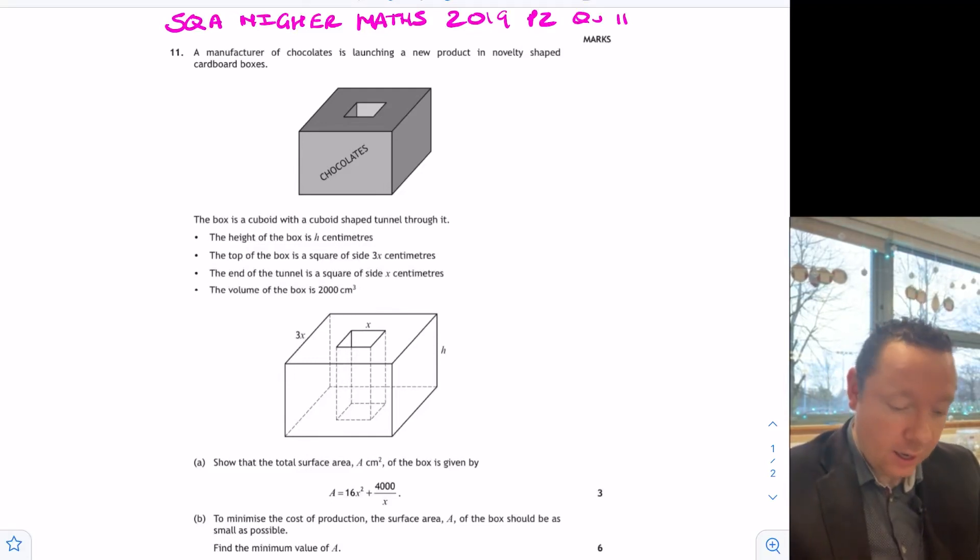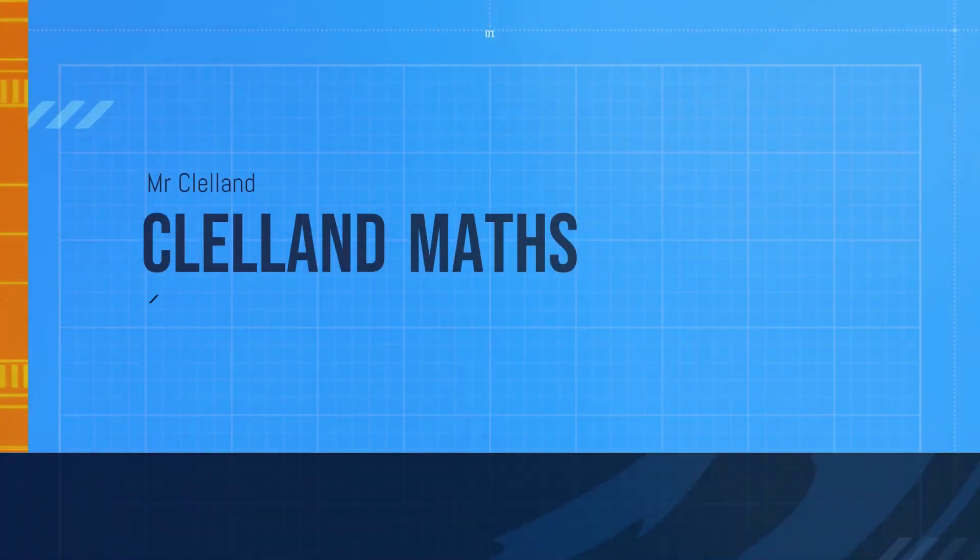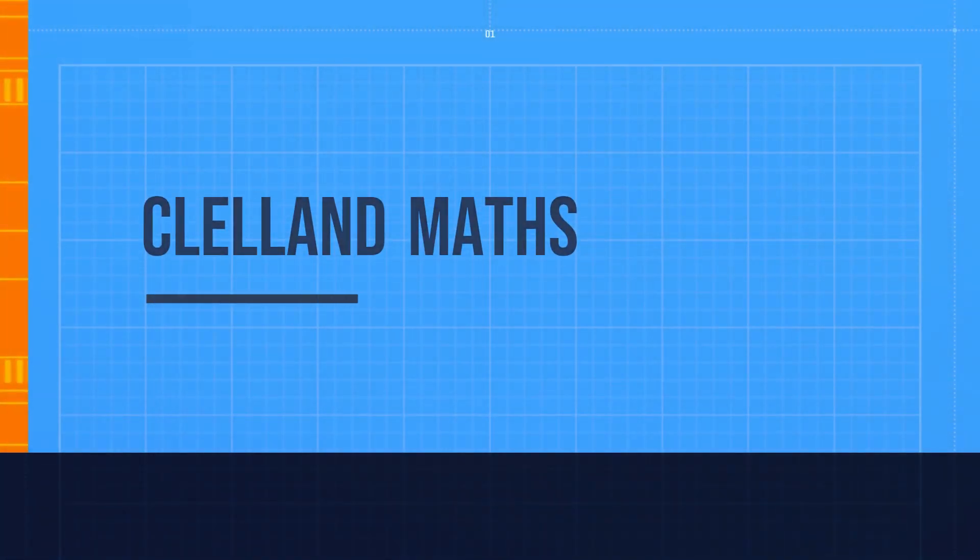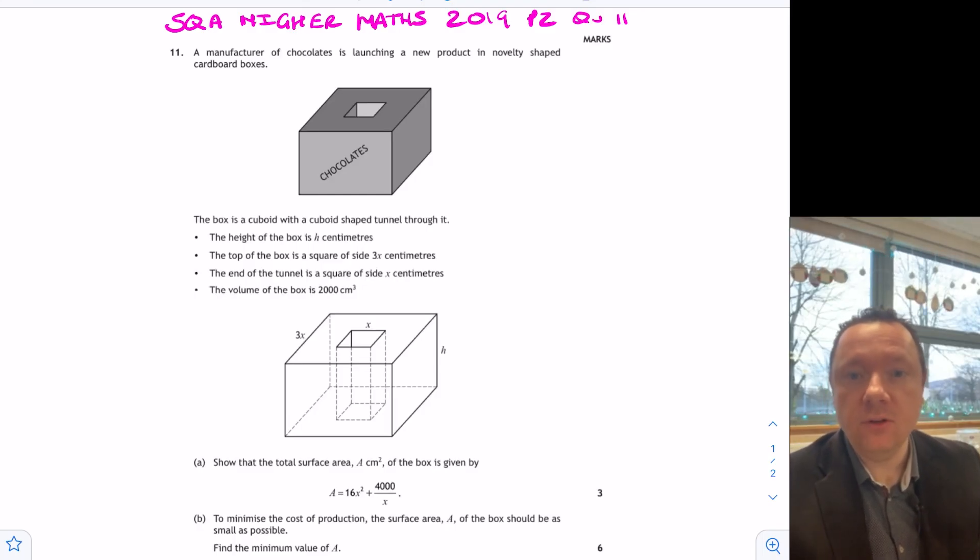What are you guys thinking about this one? A box of chocolates with a massive hole in the middle? Not sure how that works. I have a few questions here for just an optimization question. Have a look, see if you can have a go at it and then come back when you're done.